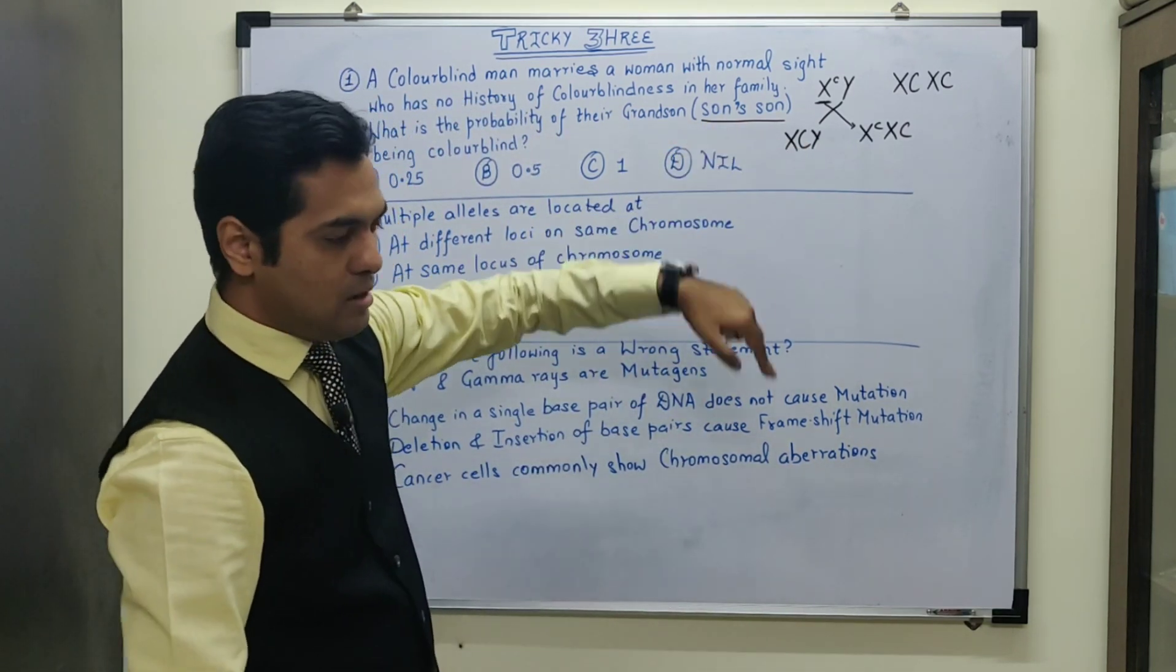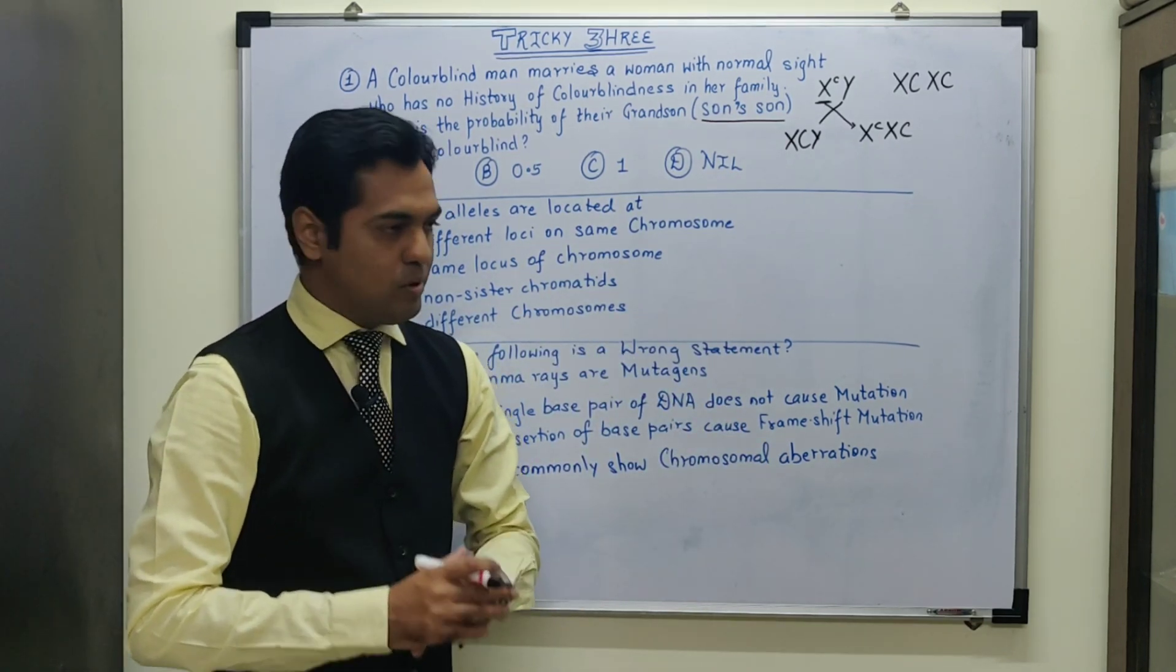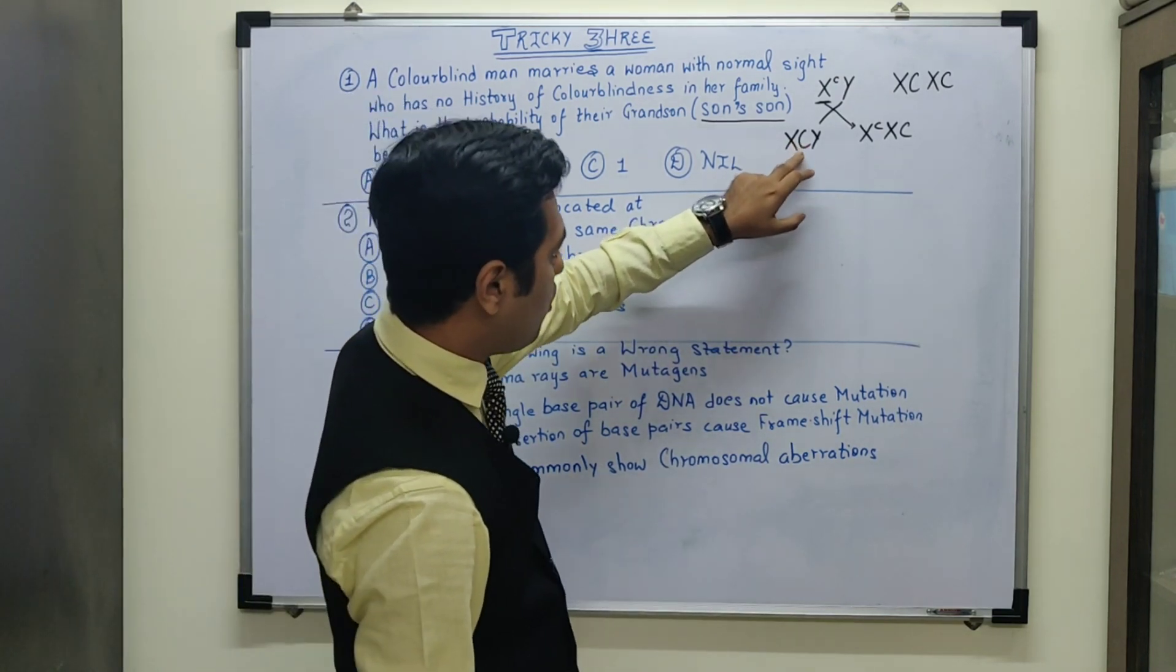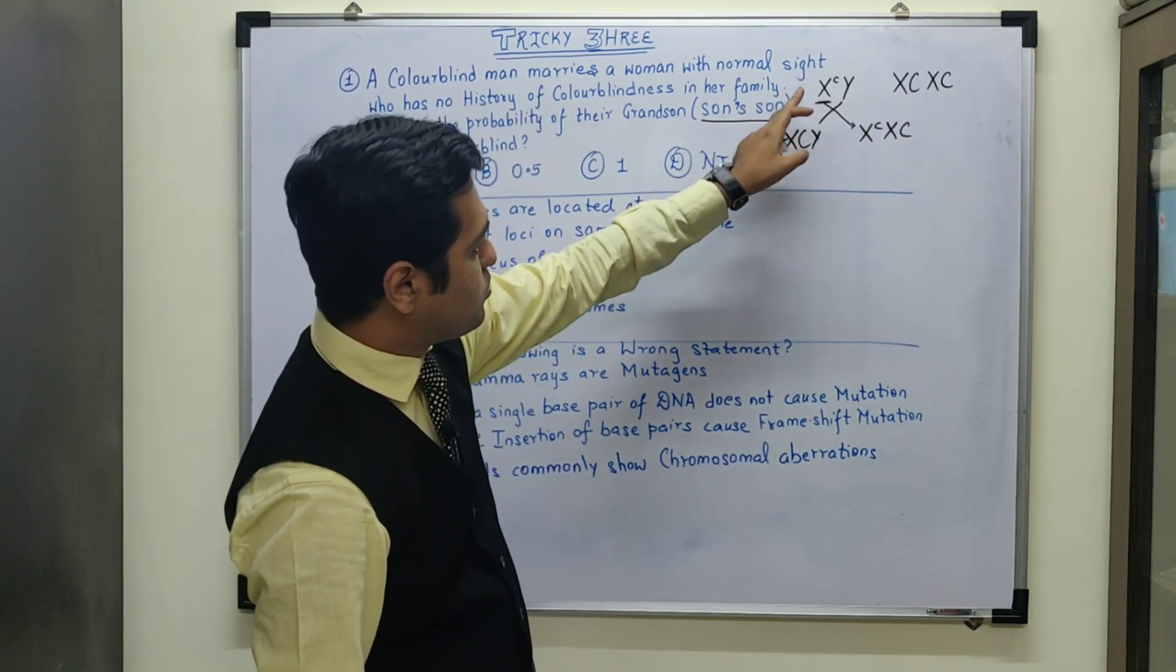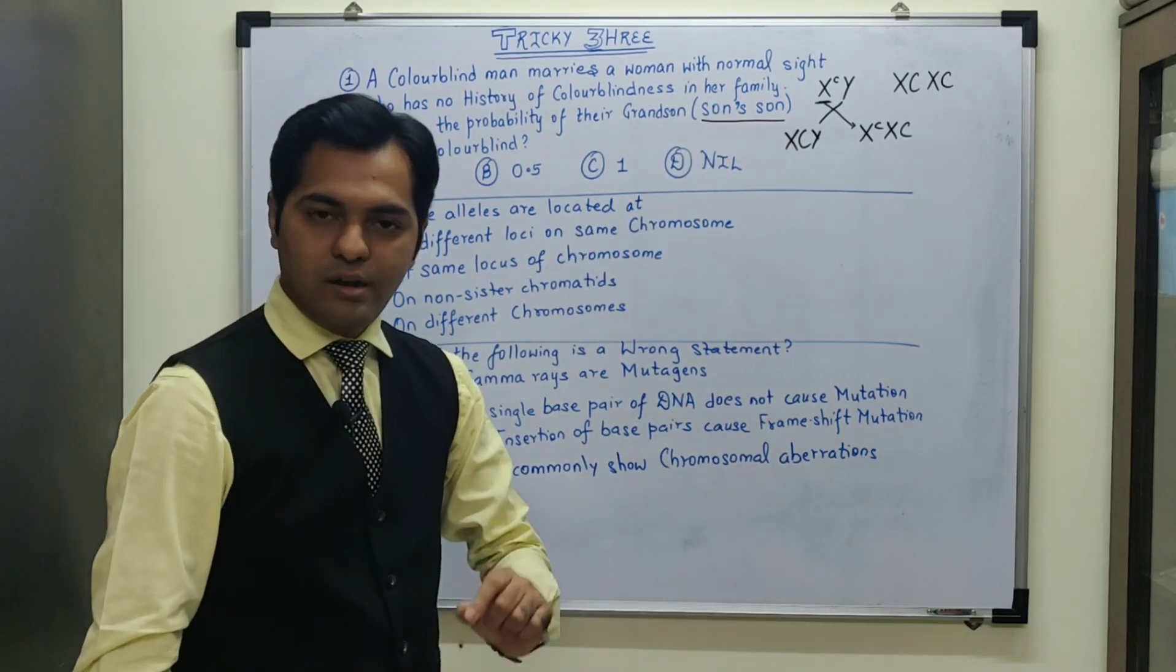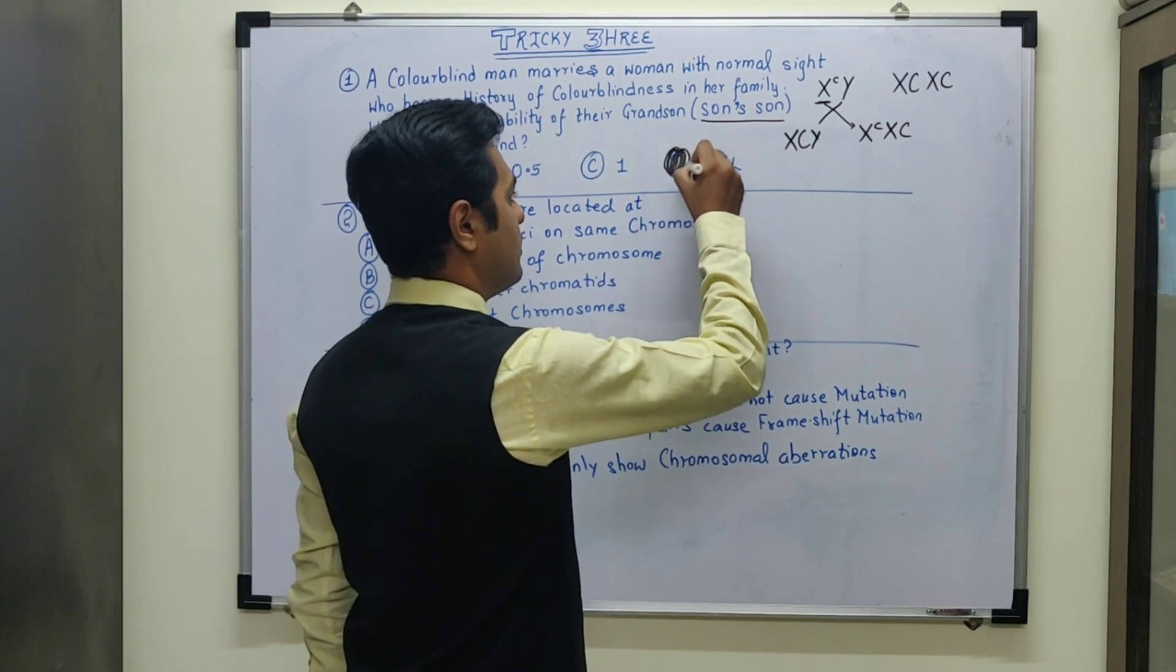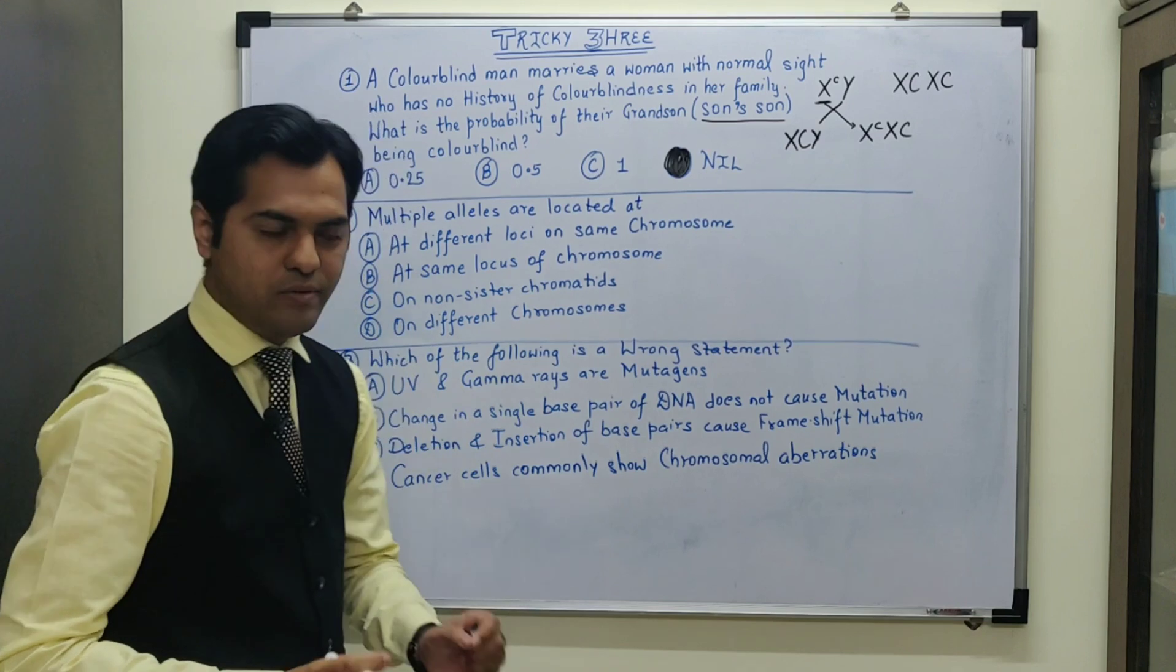So son's son being colorblind is definitely 0% probability because the son will receive the dominant gene from his mother. And from the father, the recessive gene is being transmitted to the daughter. So definitely the son's son is also going to be free from the defect of colorblindness. So the probability is nil in this MCQ. We are following the concept of crisscross inheritance, a very simple MCQ.